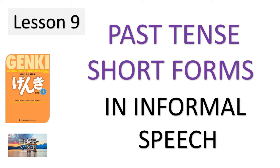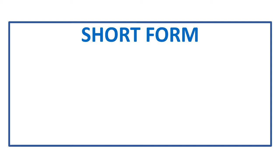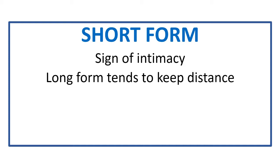In this lesson, we will learn how to use the past tense short forms in informal speech. Close friends or family members speak with each other using short forms at the end of sentences as a sign of intimacy. The use of long forms in contrast tends to imply the speaker's intention to keep a proper distance from the listener.